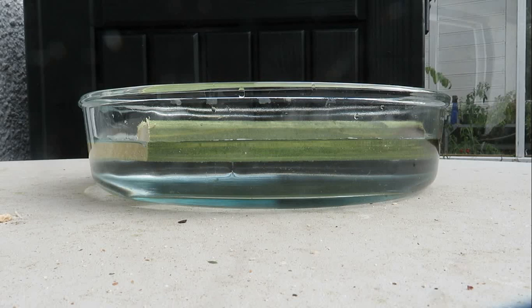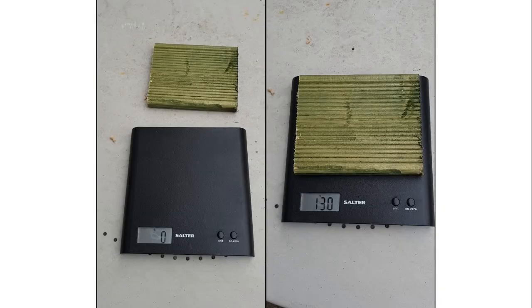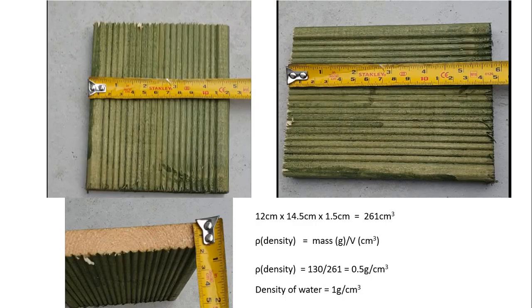Now, first of all, let's confirm that the piece of wood is indeed less dense than water. So to do this, I simply measured the weight and the volume or the mass and the volume of the piece of wood. So its mass, as you can see on these kitchen scales, is 130 grams. The volume in one direction is 12 centimeters, second direction is 14 and a half centimeters, third direction is one and a half centimeters, giving us a total volume of 261 cubic centimeters.